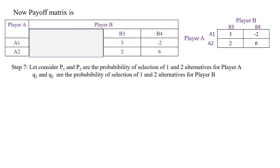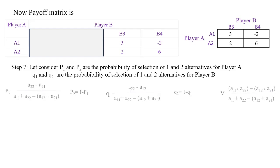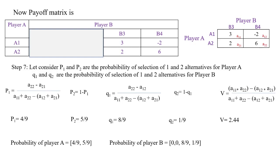Step 6: Let p1 and p2 be the probabilities of selection of alternatives 1 and 2 for player A. Let q1 and q2 be the probabilities of selection of strategies 1 and 2 for player B. Using the standard formulas, substitute the values: a11 = 3, a12 = -2, a21 = 2, a22 = 6. We get p1 = 4/9, p2 = 5/9, q1 = 8/9, q2 = 1/9, and the value of the game V = 2.44. This is the complete solution using the graphical method.